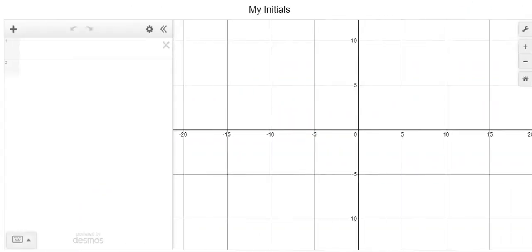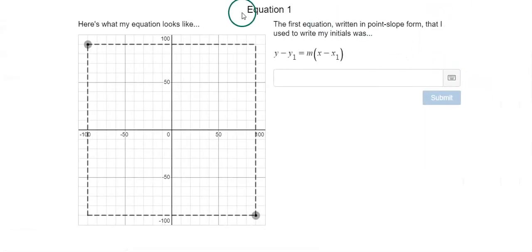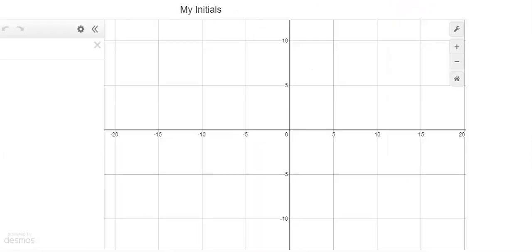So here's where the project will be turned in. This is your final draft here, so your initials by the end should appear on this screen. After you finish writing one initial, you will also have to fill out one of these attribute slides for each line, for the first ten. So let me walk you through how to do this.